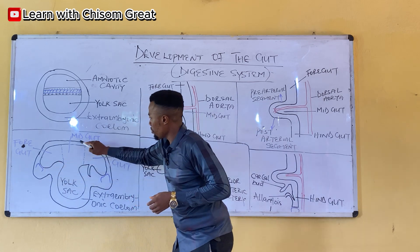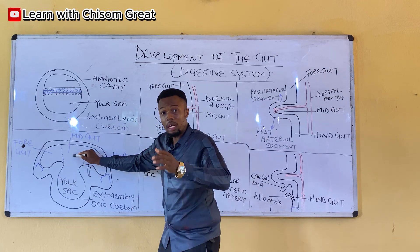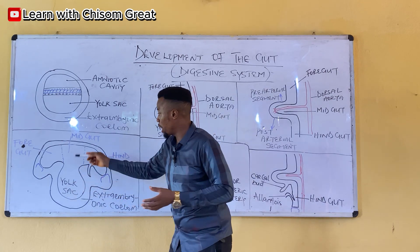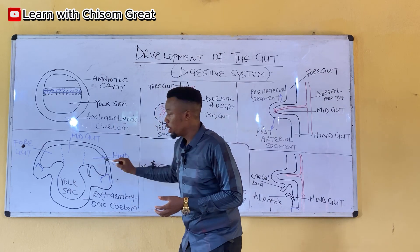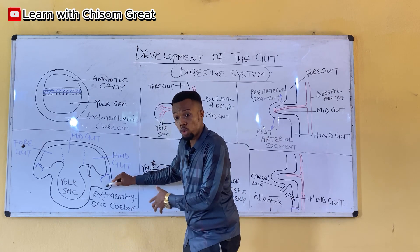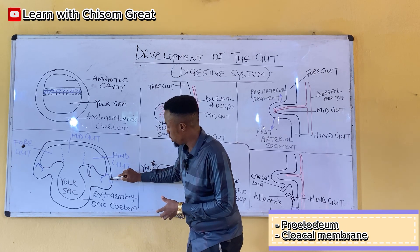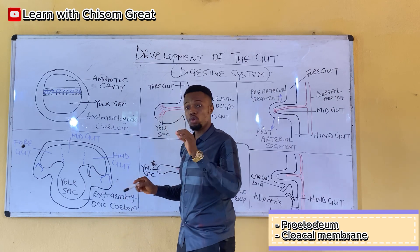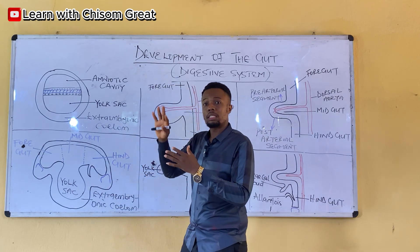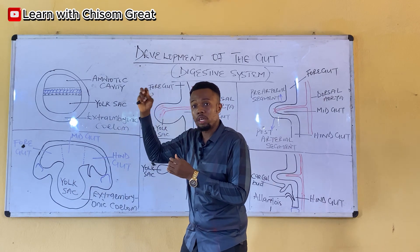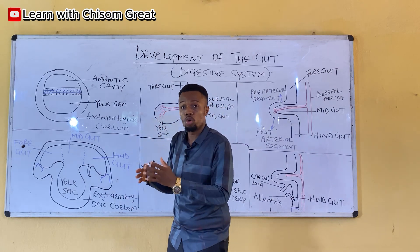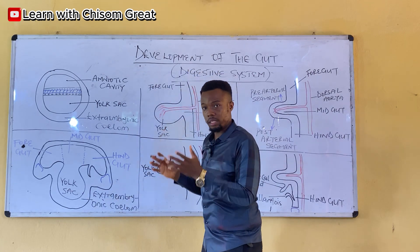The foregut is separated from the stomodeum — which develops into the mouth — by the buccopharyngeal membrane. The midgut lies in close contact with the yolk sac, as you can see here. The hindgut is separated from the proctodeum by the cloacal membrane. By the fourth week, the gut is fully formed.